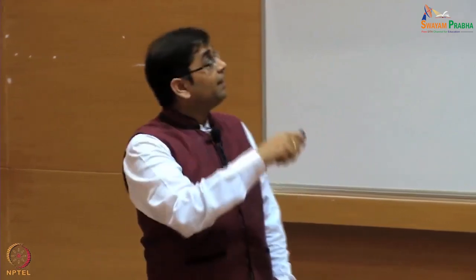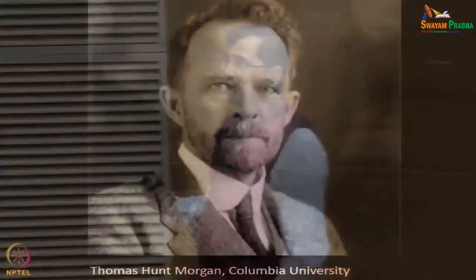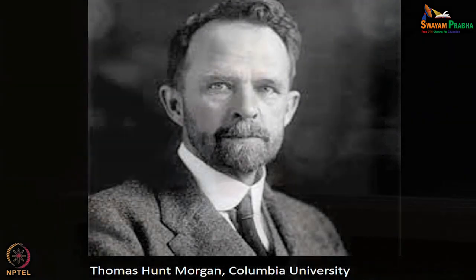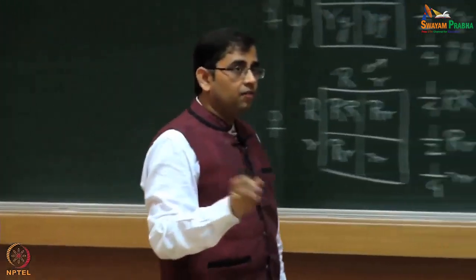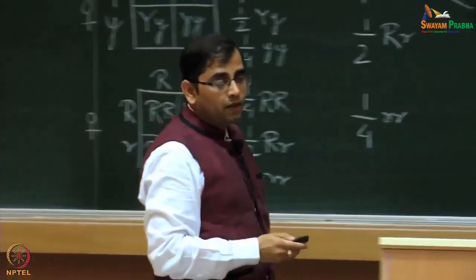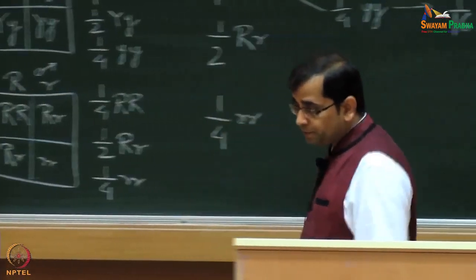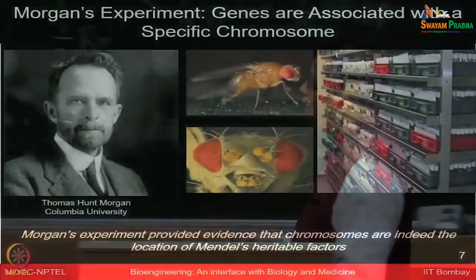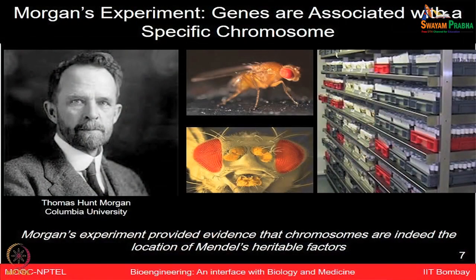At that point in the 19th century, Morgan started working on Drosophila and thought about looking at Mendelian genetics at the fly level. He finally provided evidence that chromosomes are indeed the location of Mendel's heritable factors.